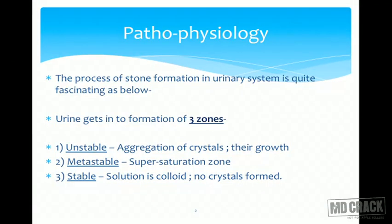Urine contains various ingredients, and depending on stasis - a very important factor towards stone formation - urine will form three different zones. If you take a sample of urine in a test tube and allow it to rest, various zones can be observed. Scientists have divided these into three distinct zones: the unstable zone, the metastable zone, and the stable zone.